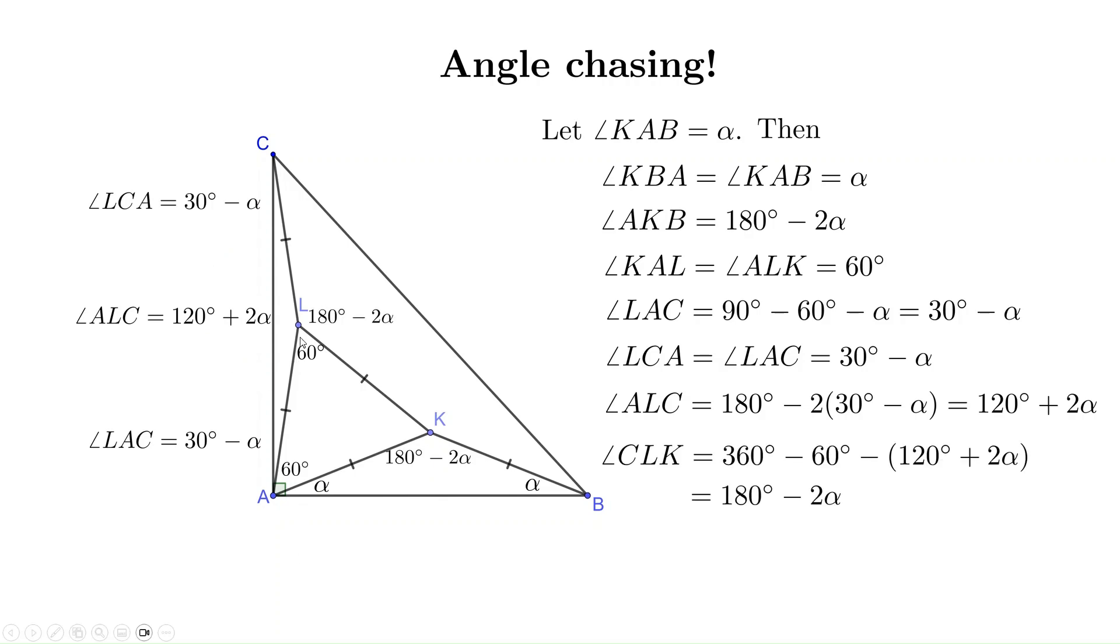Now the tracing goes to point L. Around this point, we have three angles. One 60 degrees, the second one 120 + 2α. Then the third one should be 360 - 60 - (120 + 2α). So the measure is 180 - 2α.